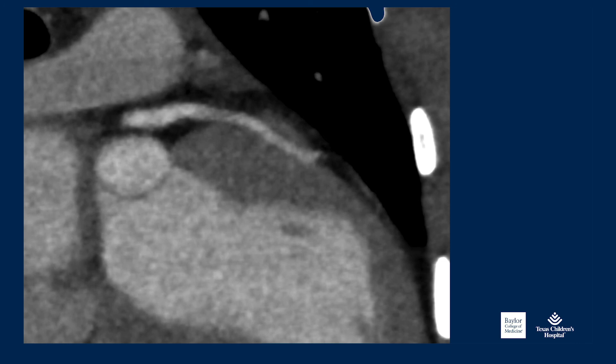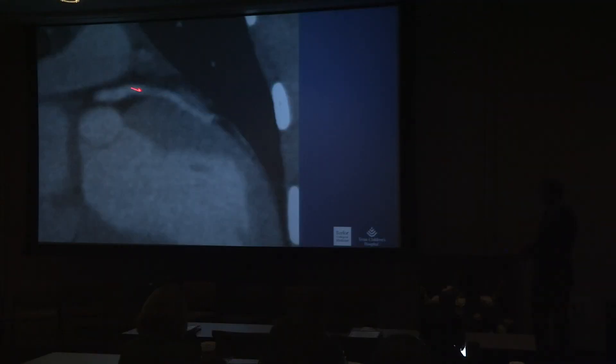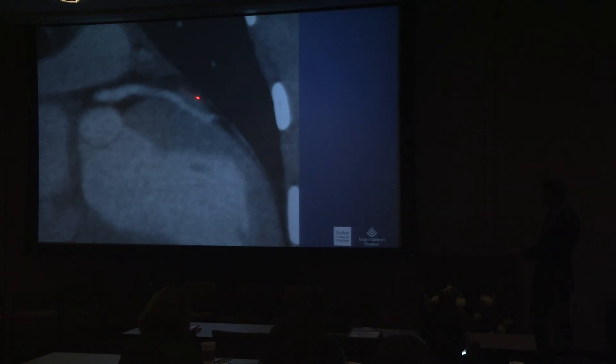This CT scan is of a teenager who had a symptomatic myocardial bridge identified on imaging, had positive provocative testing, and ultimately underwent surgery. I wanted to point out the bridge here — this is the anterior descending coronary artery at the last diagonal branch. The CT shows a shoulder proximally where the bridge begins, tapering distally — and as I'll show, the intraoperative correlation is essentially perfect. These CT scans are phenomenally accurate in describing the anatomy.